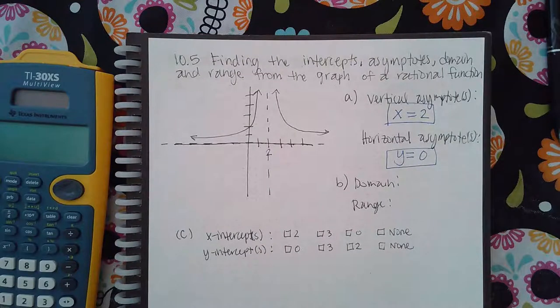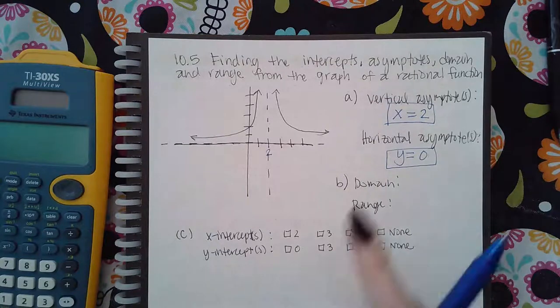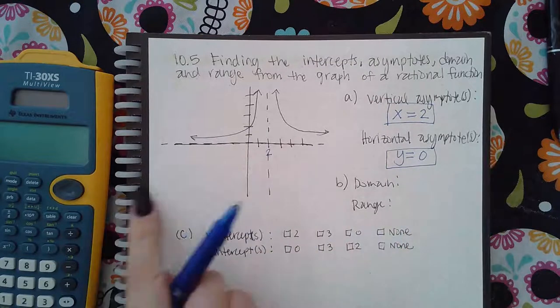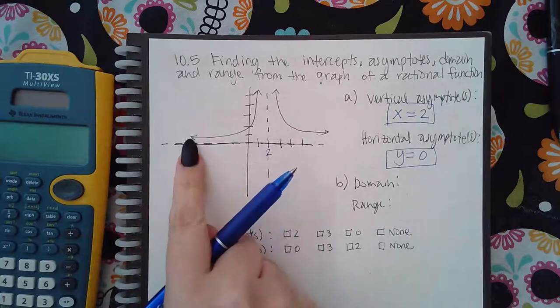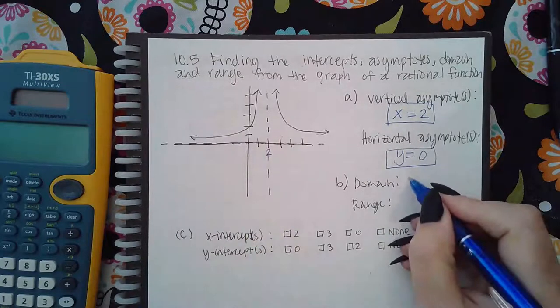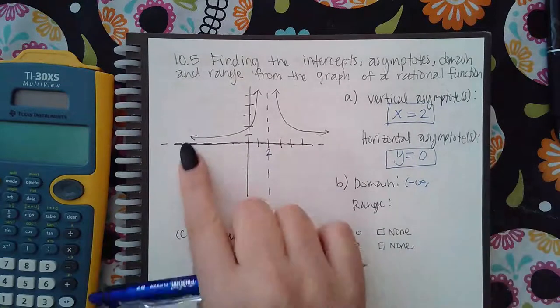Now the domain is the set of values from left to right. So it does go to the left forever, so negative infinity, and it does go to the right but then it never touches the x-value two.